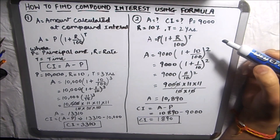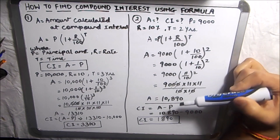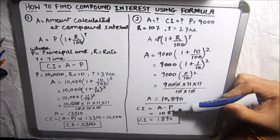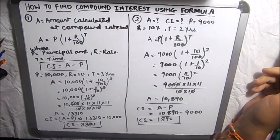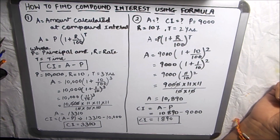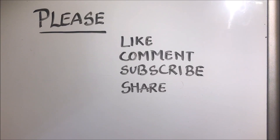This is how, by using the formula for amount and by subtracting the principal from the amount, we can find the compound interest. I hope this is helpful to you. Thanks for watching — please like, comment, subscribe, and share my videos!